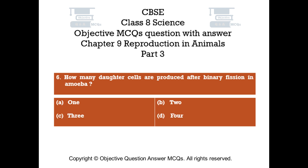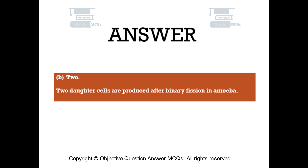Question number 6. How many daughter cells are produced after binary fission in amoeba? Option A: One. Option B: Two. Option C: Three. Option D: Four. The right answer is option B — Two. Two daughter cells are produced after binary fission in amoeba.